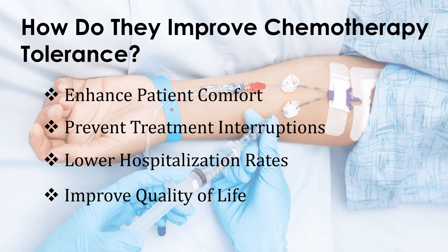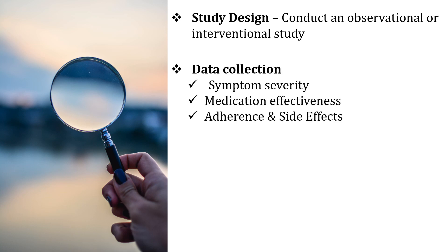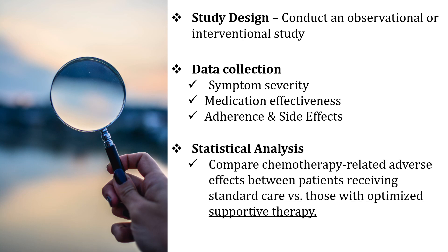Now let's see the methodology. You can conduct an observational or interventional study in oncology patients receiving chemotherapy. For data collection, assess symptom severity including nausea, fatigue, pain, and mucositis. Measure medication effectiveness through patient-reported outcomes and clinical markers. Track compliance with supportive care and any associated adverse effects. For statistical analysis, compare chemotherapy-related adverse effects between patients receiving standard care versus those with optimized supportive therapy. From this analysis, you can determine the impact of supportive care medications on treatment completion rates, quality of life, and hospitalization frequency. What we've shared is just to give you some ideas — you can modify the topics according to your preferences.